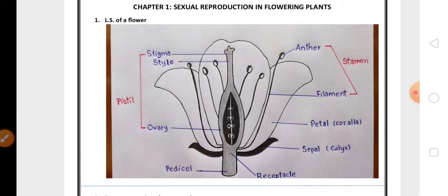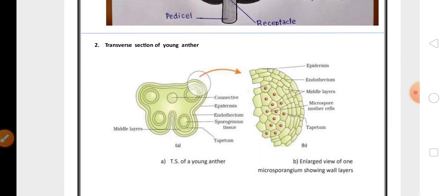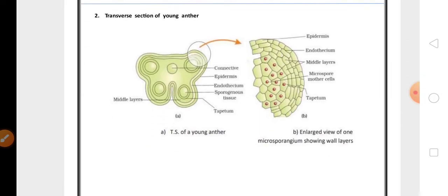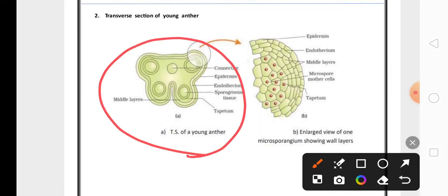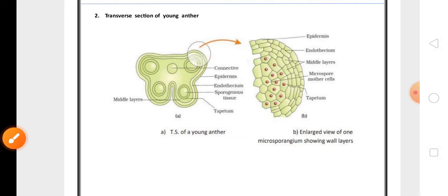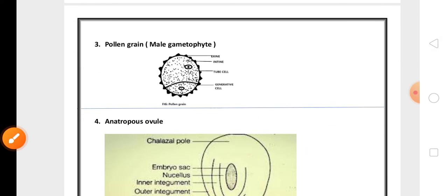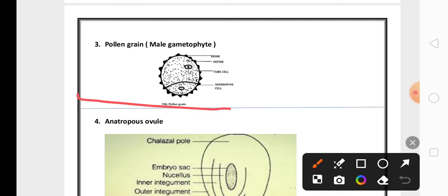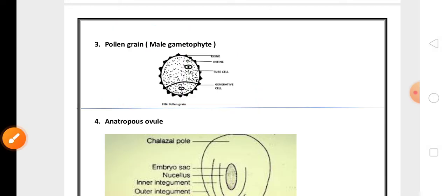Then second diagram is transverse section of young anther or the enlarged view of one of the microsporangium. Any one diagram they may ask. Then the diagram of pollen grain or male gametophyte, both are same. Male gametophyte in plants nothing but pollen grain diagram, very important for the exam.